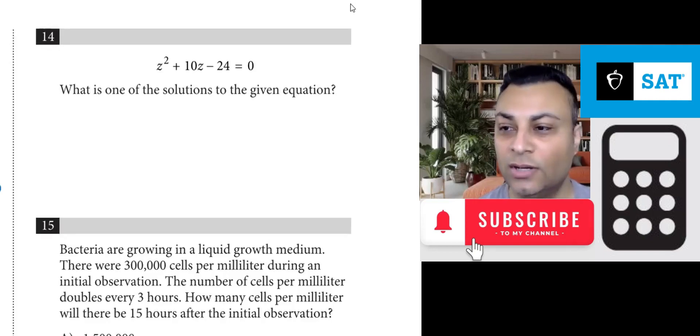Question 14. Z squared plus 10z minus 24 equals zero. What is one of the solutions to the given equation? We can solve this by factoring.